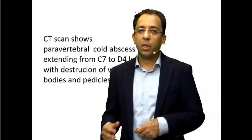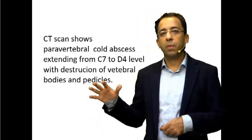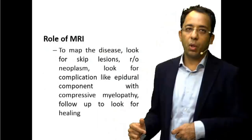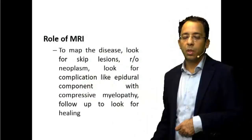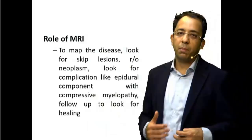MRI can pick up spondylodiscitis due to tuberculosis, detect abscesses, identify the intraspinal component that may cause myelopathy, and help with follow-up. MRI is the key. Although we presented this case on CT and X-ray, do not forget the role of MRI. Tuberculosis may have skip involvement where MRI helps. MRI can differentiate neoplasm from tuberculosis, show the epidural component, spinal cord compression, compressive myelopathy, and evidence of healing on anti-tuberculosis treatment (ATT).